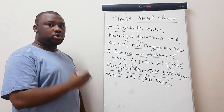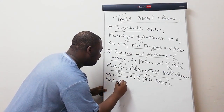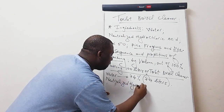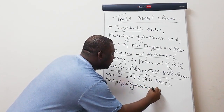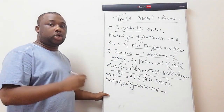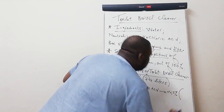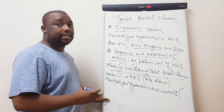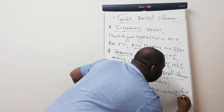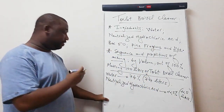The next ingredient is neutralized hydrochloric acid. This should be 22.5% of the total volume — that's 22.5 liters out of 100 liters.